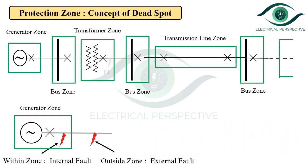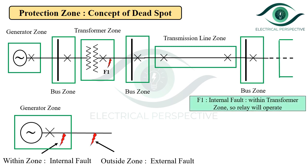Consider fault F1 — it is an internal fault as it is occurring within the transformer zone. So the relay and the circuit breaker will operate to isolate the faulty part.